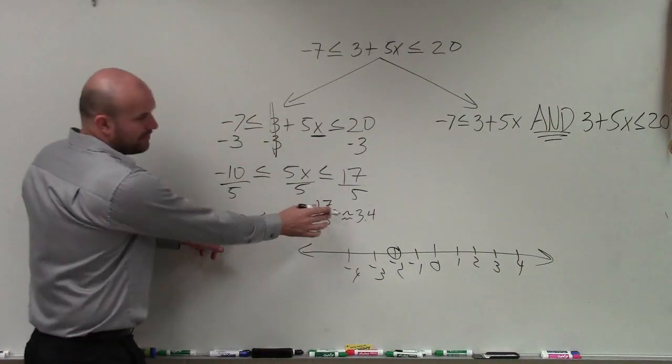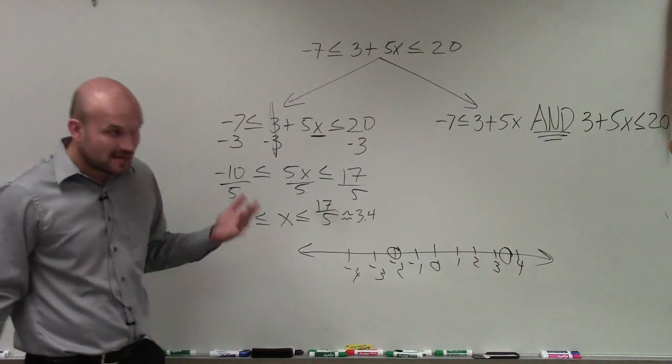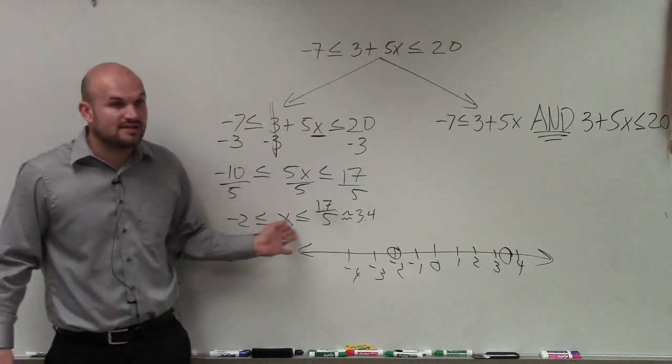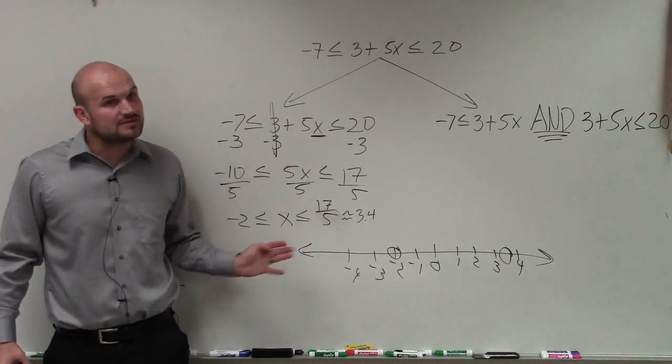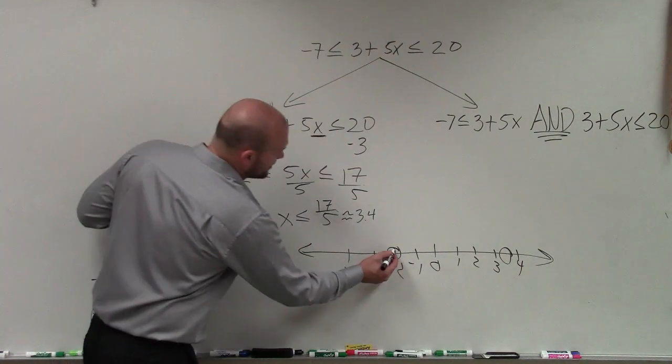So my two values are -2, so I put a nice circle there, and 3.4, which is between 3 and 4. Now, based on what we learned last class period, are these points open or closed? Are they a part of the solution or not a part of the solution? They are part of the solution, so we're going to shade them.